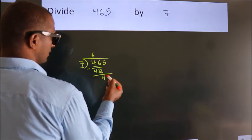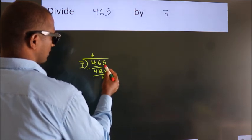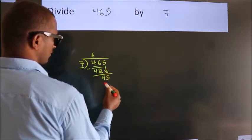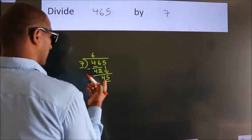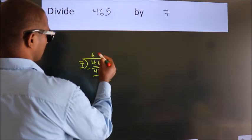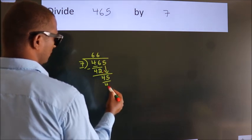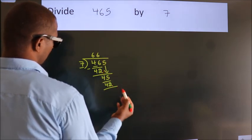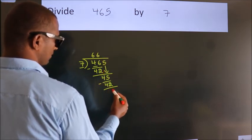After this, bring down the beside number. So, 5 down. So, 45. A number close to 45 in the 7 table is 7×6, 42. Now, we subtract. We get 3.